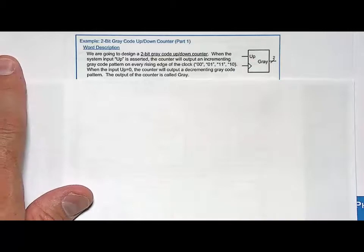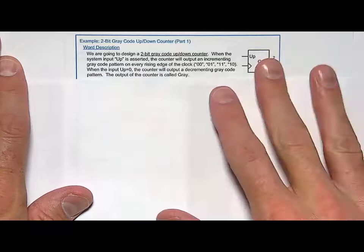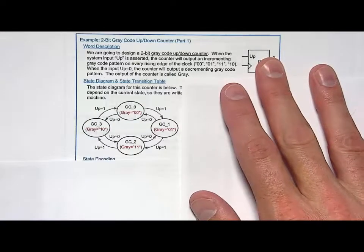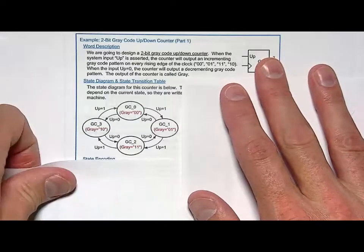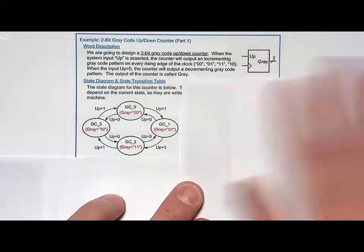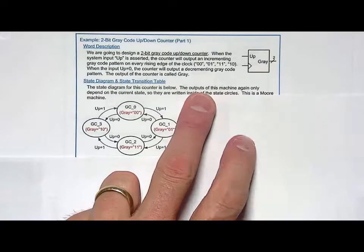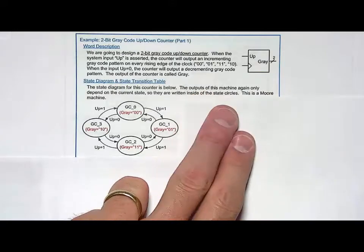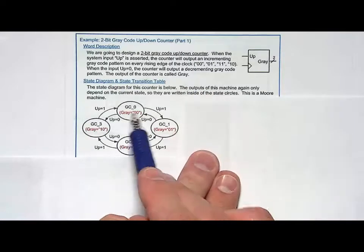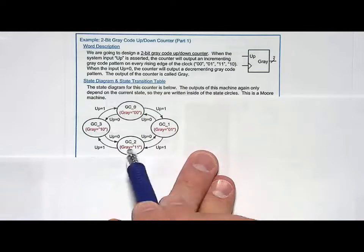So pretty straightforward. And now we're going to create our state diagram. And what that looks like is this. It's a pretty straightforward one. We're going to choose to have four states, one representing each output. So we'll call them GC zero for gray code zero, GC one, GC two, GC three.